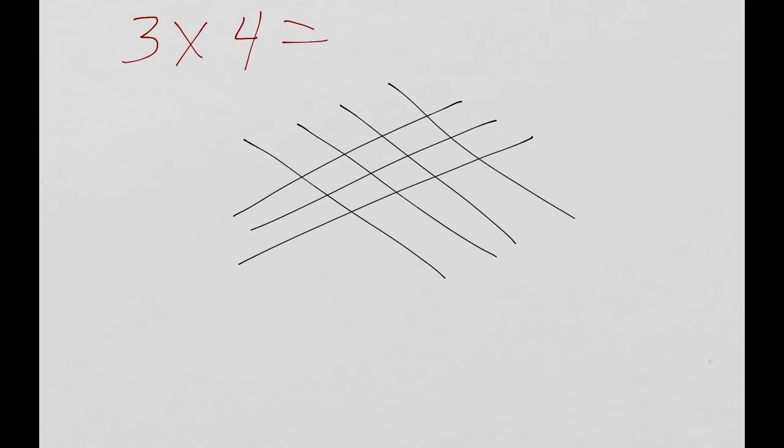Don't believe me? Let's do another one. So let's say our question is, oh, let's say 3 times 4. Now, how would you solve 3 times 4 using the method that I just showed you? You're right. You'd start with the number 3 and make 3 lines.